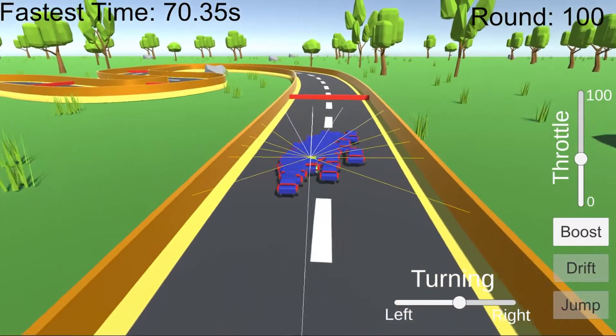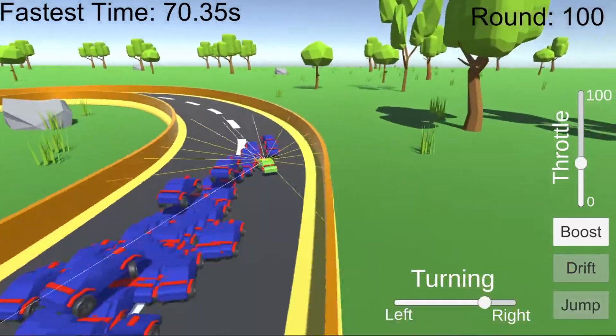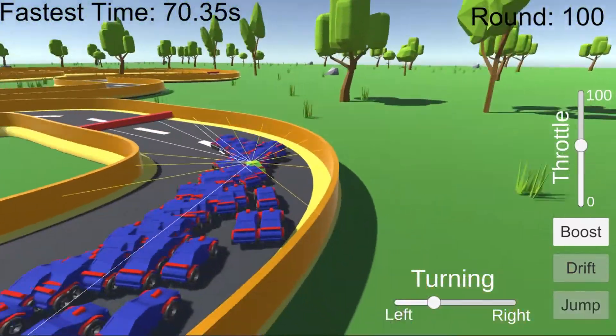By round 100, they've managed to get times of about 70 seconds, which is 10 seconds faster than the first car that completed a full lap.